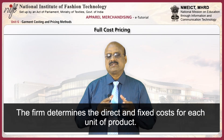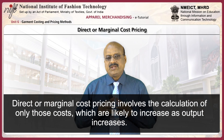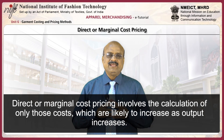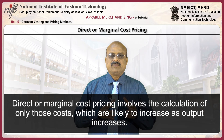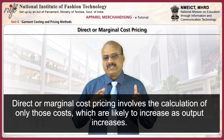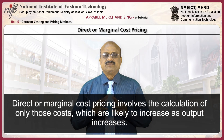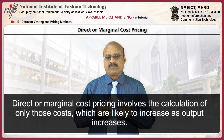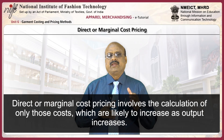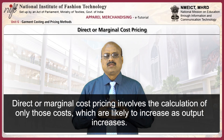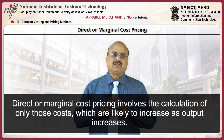Direct or marginal cost pricing involves the calculation of only those costs which are likely to increase as output increases. Indirect or fixed costs remain unaffected whether 1 unit or 1,000 units are produced. Like full cost pricing, this method includes a profit margin in the final price, but considers marginal costs only. It helps in competitive pricing policy, making marginal cost pricing particularly useful in giving competitive prices.